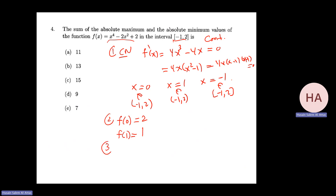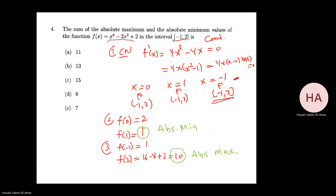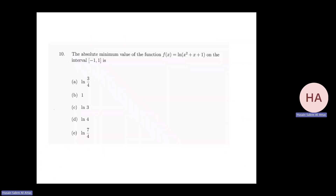f(0) equals 0 minus 0 plus 2 equals 2. f(1) equals 1 minus 2 plus 2 equals 1. f(minus 1) equals 1 minus 2 plus 2 equals 1. f(2) equals 16 minus 8 plus 2 equals 10. The absolute maximum is 10 and the absolute minimum is 1. Their sum is 10 plus 1 equals 11.